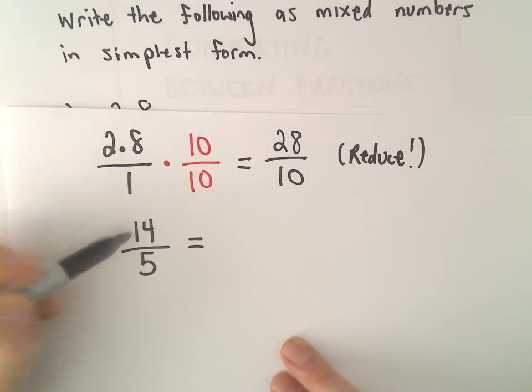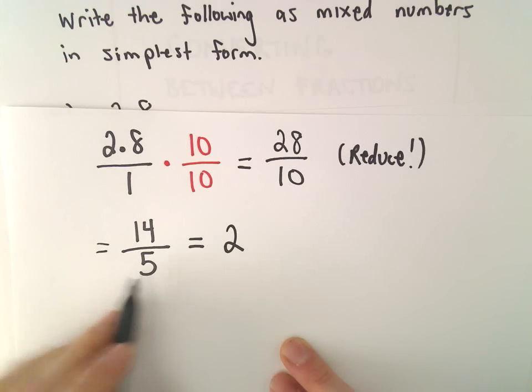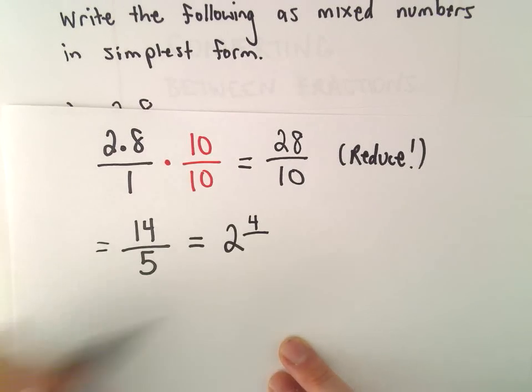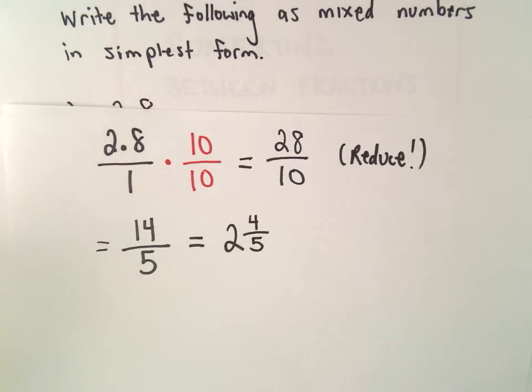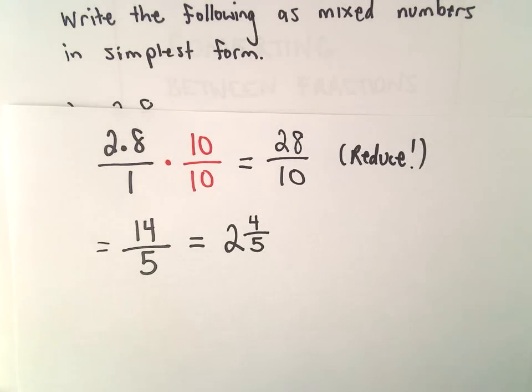So 5 goes into 14, I guess, 2 whole times without going over, right? Because 2 times 5 would give us 10. We would need an extra 4 to get up to 14. And then we just have the 5 left over. So 14 over 5 is going to leave us with 2 and 4 fifths as our mixed number.